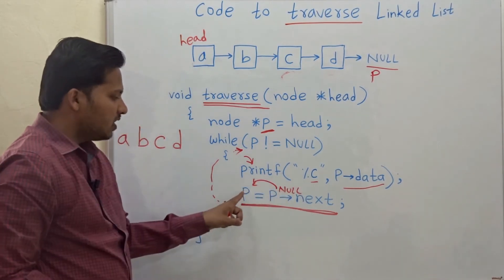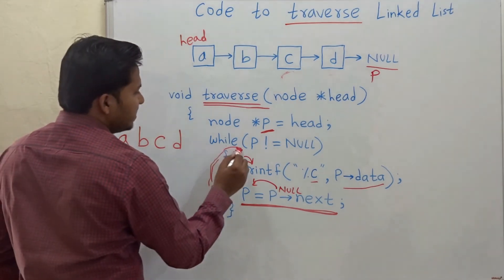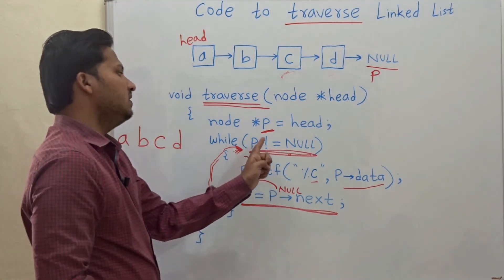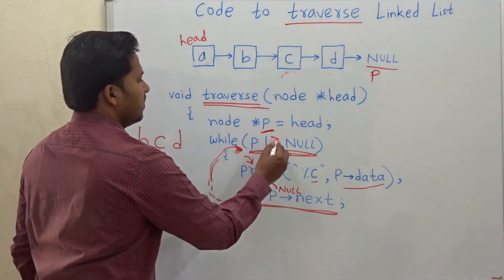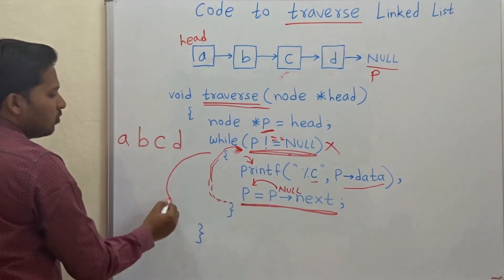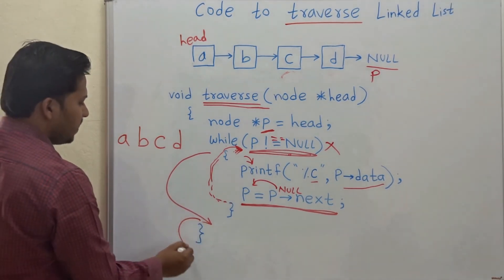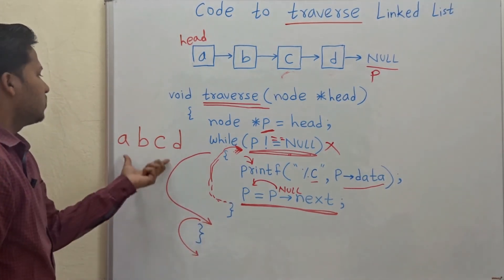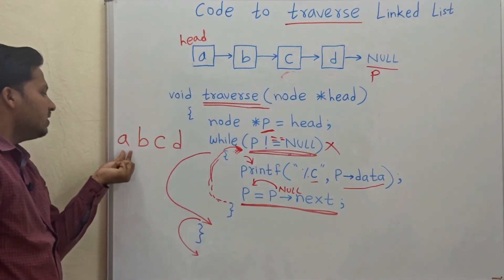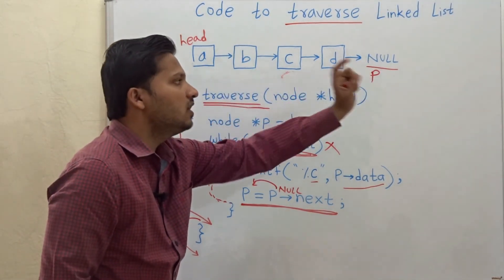When p becomes null, in the next iteration the while condition fails because p is now equal to null. So we come out of the while loop and out of the function. In this way we have traversed the linked list and printed every node till the end.